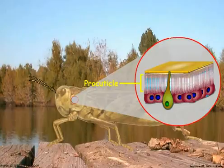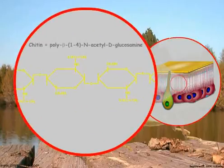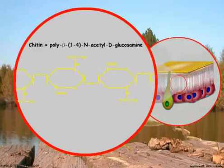Above the epidermal cells is the procuticle, a layer of protein intermixed with chitin. Chitin is a complex polysaccharide comprised mainly of N-acetylglucosamine subunits mixed with some glucosamine, linked in chemically resistant beta-1,4 bonds similar to the inert beta-glucose of cellulose. Chitin gives the cuticle strength and stability and aids in water retention.